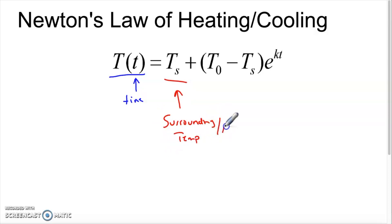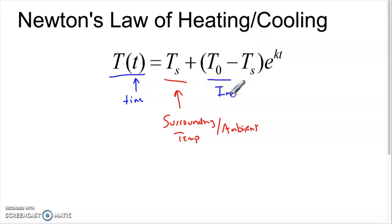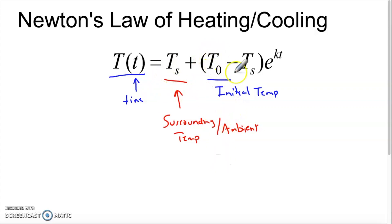Capital T is the output — the temperature after a certain amount of time. T sub s is the surrounding temperature — s for surrounding. You'll also see this called the ambient temperature: that's the temperature of the room or the vessel something is heating or cooling inside, for example an oven or a freezer. T sub zero, or T-naught, is the initial temperature — the temperature the object is at initially.